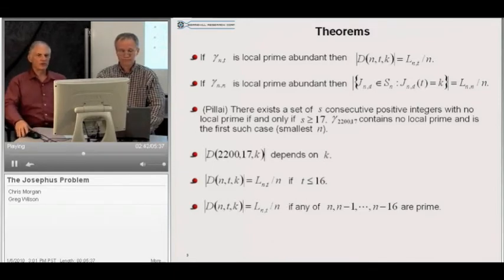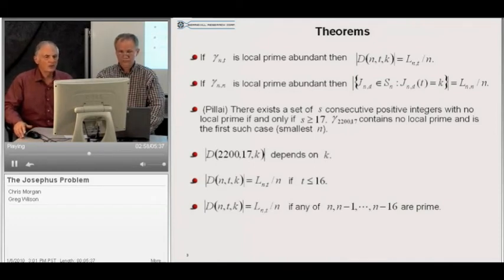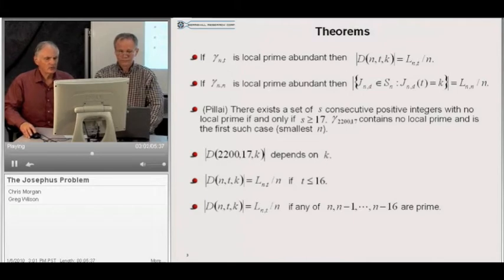Local prime abundance is connected with the famous Indian mathematician SS Pillay, who proved that there exists a set of s consecutive positive integers with no local prime if and only if s is greater than or equal to 17. The first occurrence of such set is gamma 2200 comma 17, and it corresponds to the first non-trivial enumeration of the d. In fact, the number of elements in d 2217 k depends upon k.